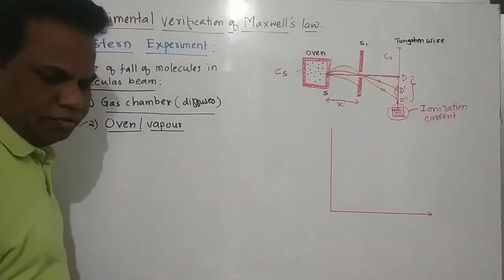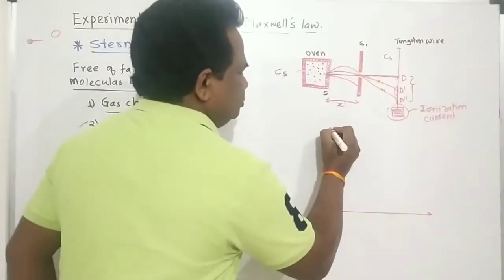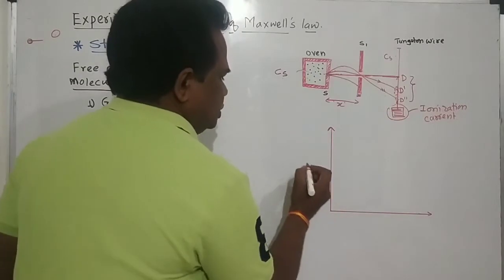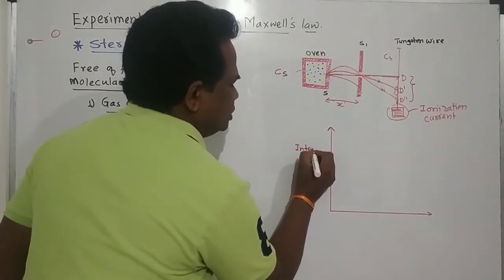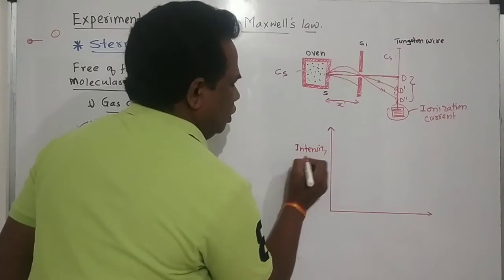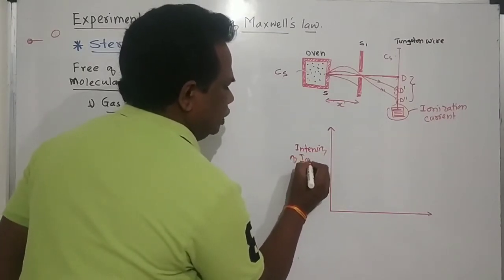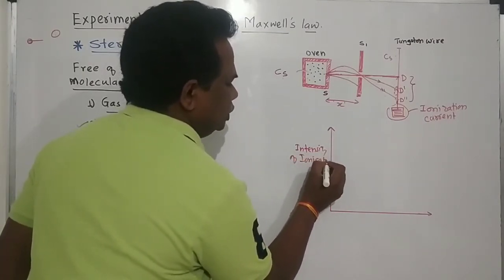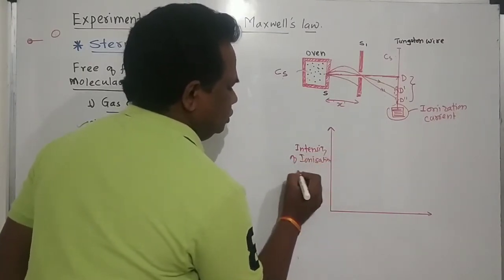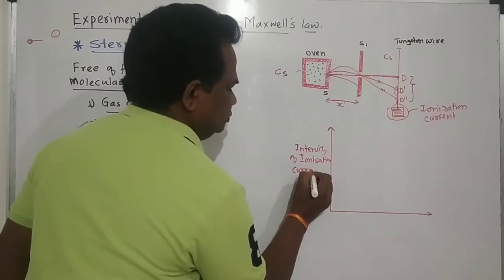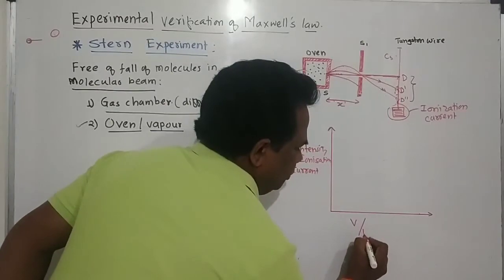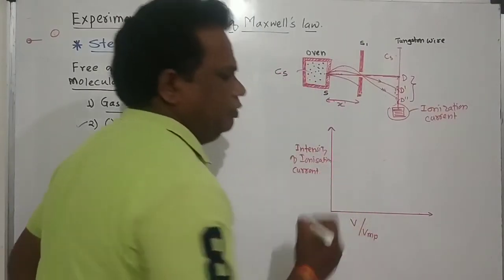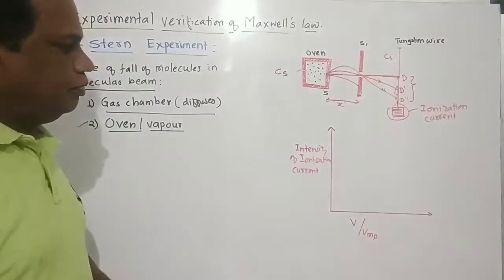We can plot the graph of the intensity of ionization current versus the velocity divided by Vmp — that is, the most probable velocity.